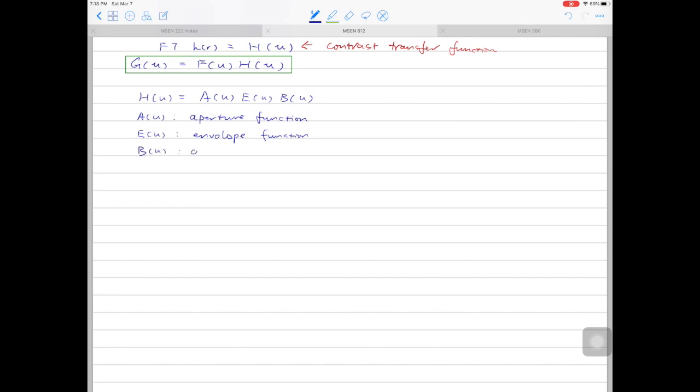B(u) is the aberration function. It is caused by the aberration of the lenses.